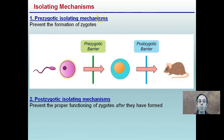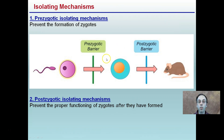There are prezygotic isolating mechanisms, which prevent the formation of a zygote. This is a barrier that somehow prevents the sperm getting to the egg, or the pollen to the egg. Then there are postzygotic isolation mechanisms, which prevent the proper functioning of the zygote after it has formed — something is preventing it from growing into a fully developed and normally functioning individual.